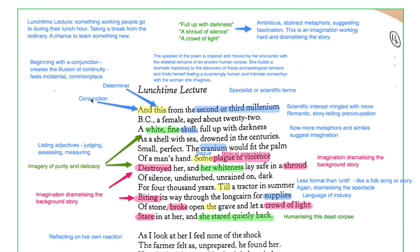Then you've got the conjunction here. And this, from the second or third millennium, creates an illusion of continuity. We suddenly feel immediately that stuff has been going on before this. We're not even at the beginning of the lecture. We're in the middle of the lecture. So, the poem feels incidental, perhaps.